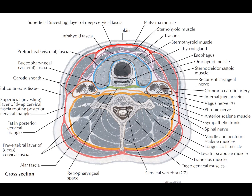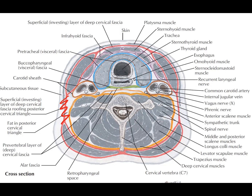When the investing layer comes near the sternocleidomastoid muscle, it divides into two layers, then rejoins as one layer posteriorly. It again divides into two layers when it meets the trapezius muscle. This is how the superficial layer of the deep cervical fascia covers both the sternocleidomastoid and trapezius muscles, and forms the roof of both the posterior and anterior cervical triangles.